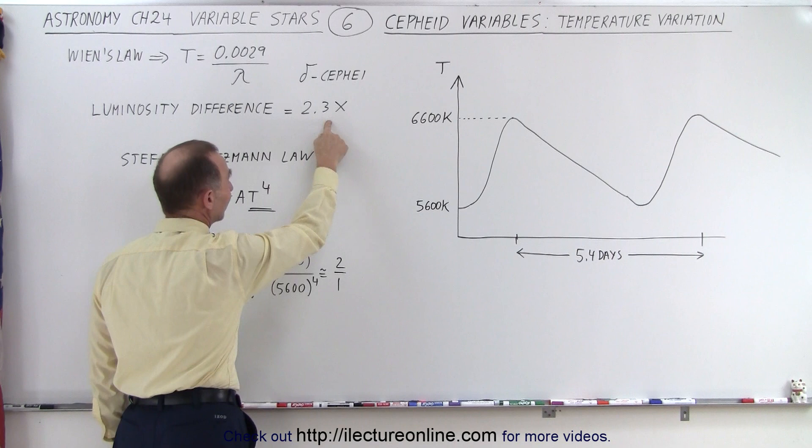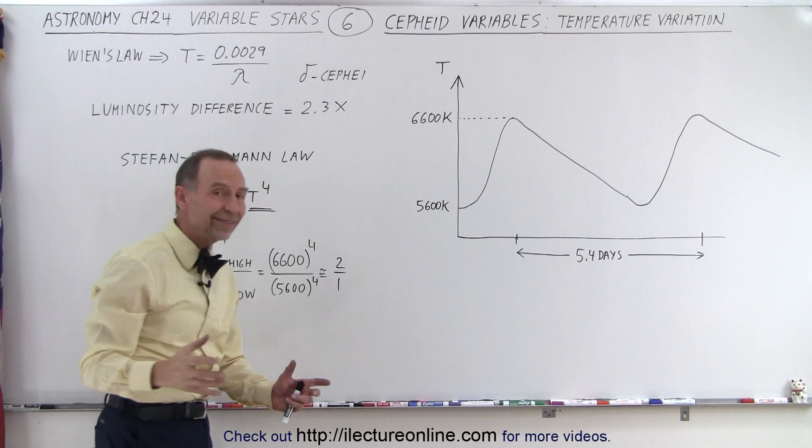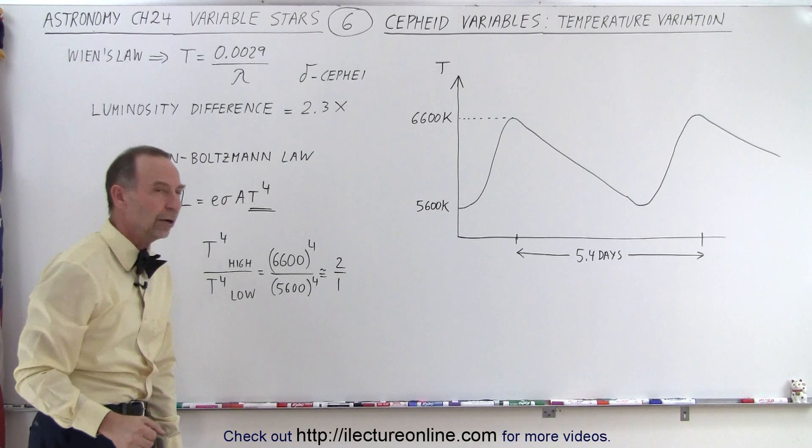And now realizing that the luminosity difference measured of Cepheid variable is 2.3 times, meaning the difference between the luminosity here and the luminosity there, we can see that almost the entire difference can be explained by the difference in the surface temperature of the star.